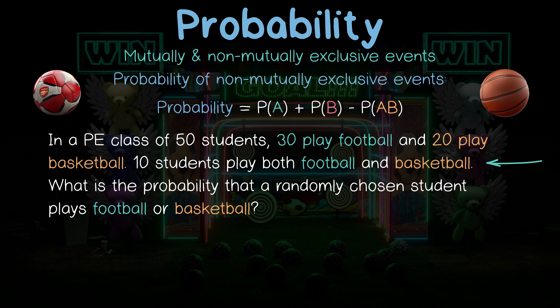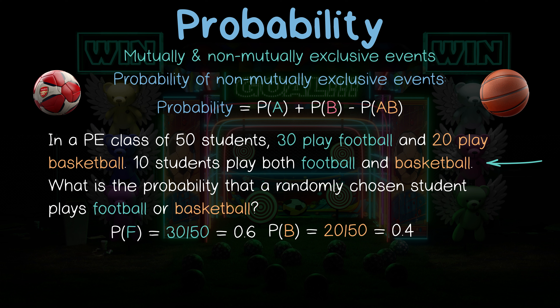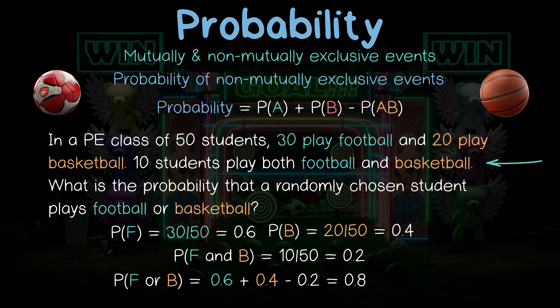We need to add together our probabilities and then subtract the overlapping probability. The probability that a student plays football is 30 out of 50 students, which is 0.6. The probability that they play basketball is 20 over 50, so 0.4. And the probability that they play both is 10 over 50, which is 0.2. So, 0.6 plus 0.4 minus 0.2, giving us our final probability of 0.8.